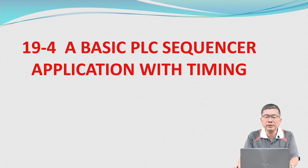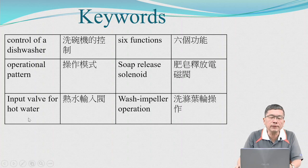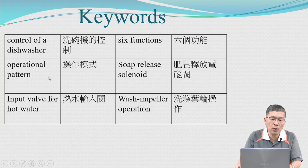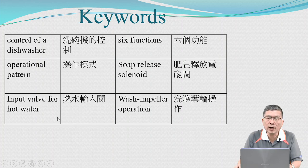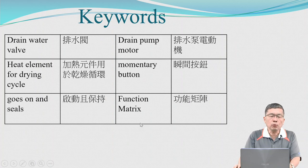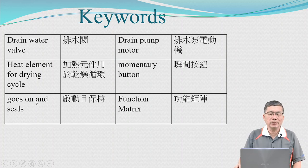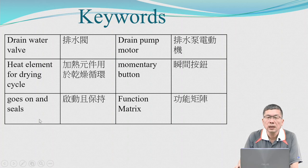A basic PLC sequencer application with timing. Key words: control of a dishwasher, six functions, operational pattern, soft release solenoid, input valve for hot water, wash impeller operation, drain water valve, drain pump motor, heat element for drying cycle, momentary button goes on and seals, function matches.